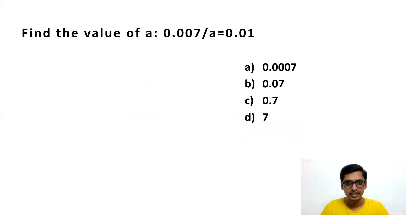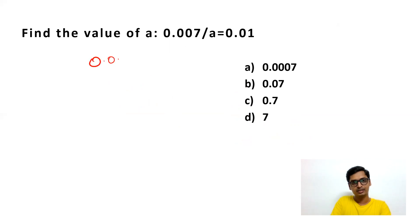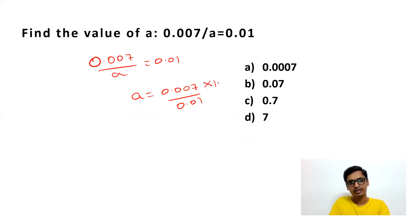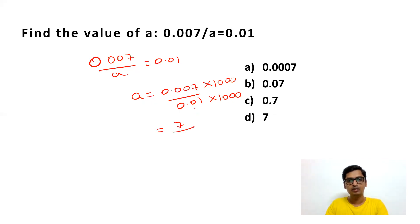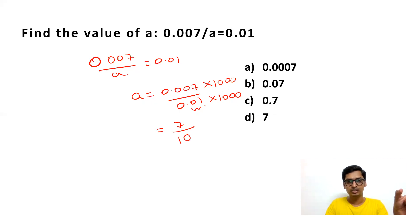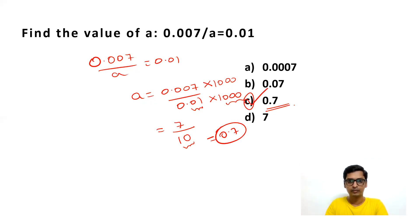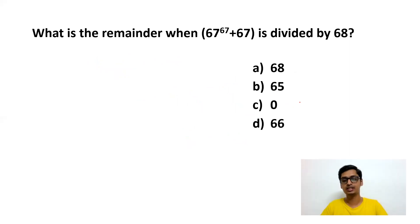Next question: Find the value of a, so 0.007 by a equals 0.01. This is a normal surds and indices question. Take a to the right-hand side: a equals 0.007 divided by 0.01. Multiply both numerator and denominator by 1000 — you get 7 divided by 10, because 0.01 into 1000 is 10. So 7 by 10 is 0.7. This is your answer. This kind of question is very popular in Cognizant.